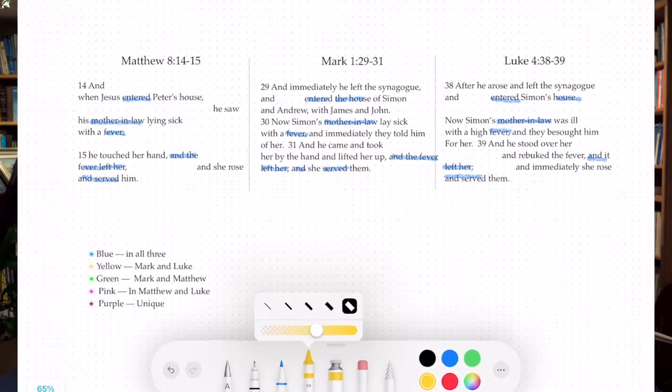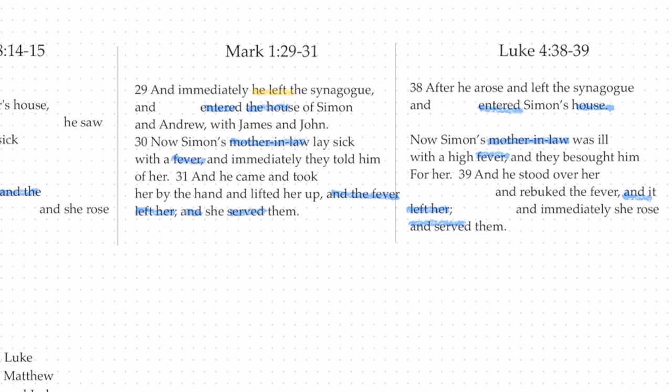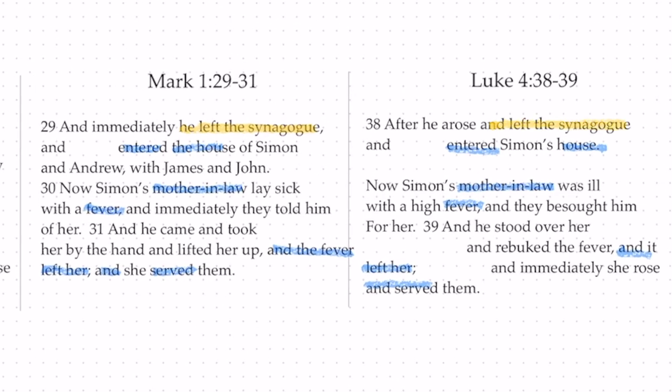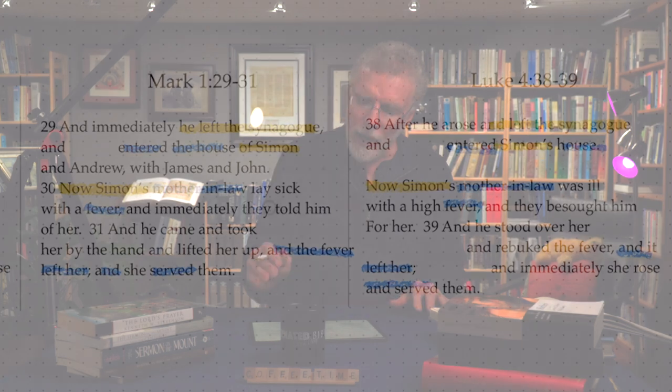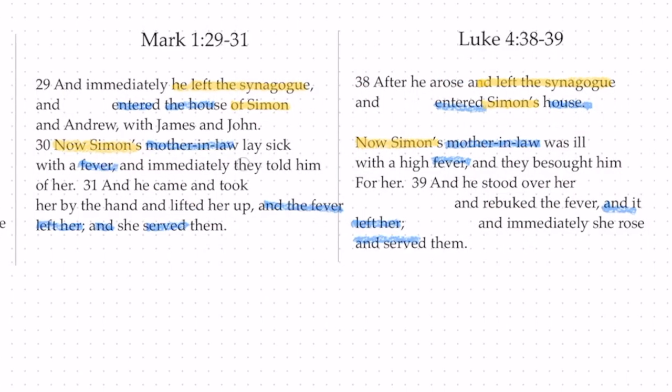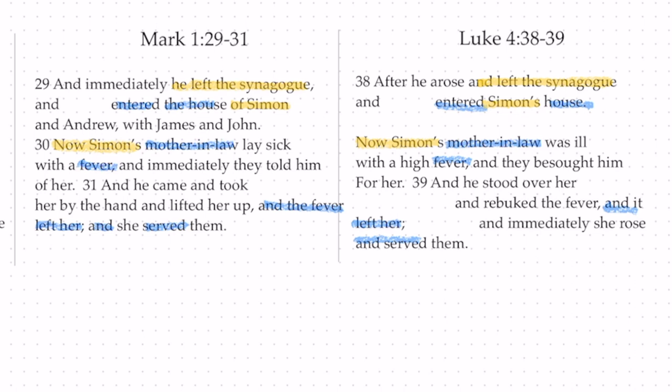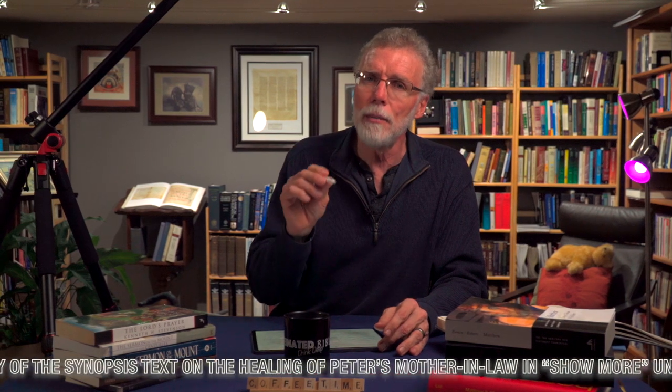Now let's color in the words that Mark and Luke have in common, using yellow. At the very start, Mark and Luke mention that Jesus left the synagogue and went to Peter's house — that reference forms a nice transition from one pericope to the next. Mark and Luke also refer to Peter as Simon. I colored Simon differently than Peter in Matthew — and it comes down to an interpretive decision: do you see a significant difference between calling him Simon or Peter, or is it just stylistic? This is why I recommend pencils, so when you change your mind, you can erase and correct it.